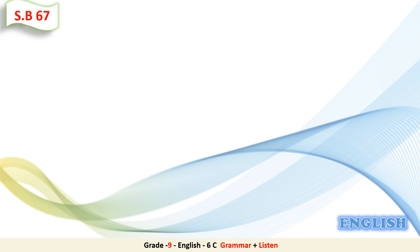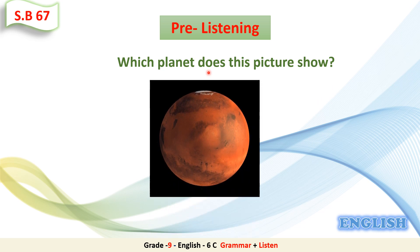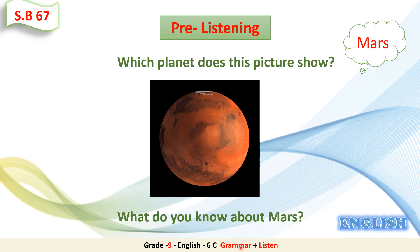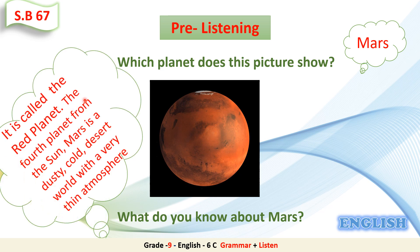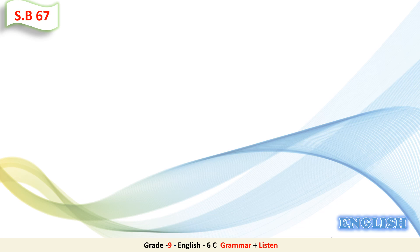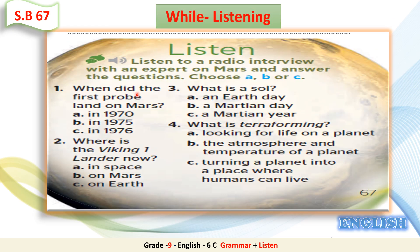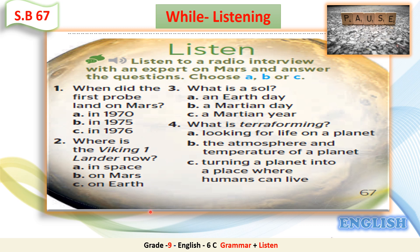Let's go back to Students' Book page 67 and do the listening task. First, a pre-listening activity: which planet does this picture show? It's Mars. What do you know about Mars? It is called the red planet – the fourth planet from the Sun. Mars is a dusty, cold desert world with a very thin atmosphere. Now for the while-listening activity, listen to a radio interview with an expert on Mars and answer the questions, choosing A, B, or C. Pause the video to read the questions first.